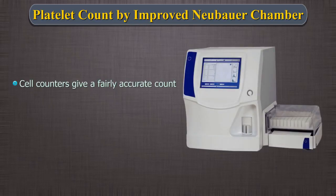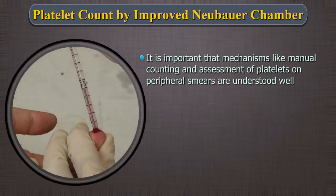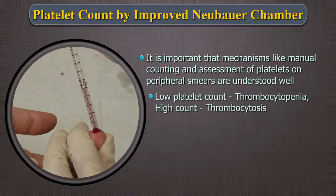Cell counters nowadays give a fairly accurate count. However, platelet counting on cell counters is often flagged due to several reasons which are discussed in the respective section. Thus, it is important that mechanisms like manual counting and assessment of platelets on peripheral smears are understood well and the skills for such obtained. A low platelet count is called thrombocytopenia and a high count thrombocytosis.